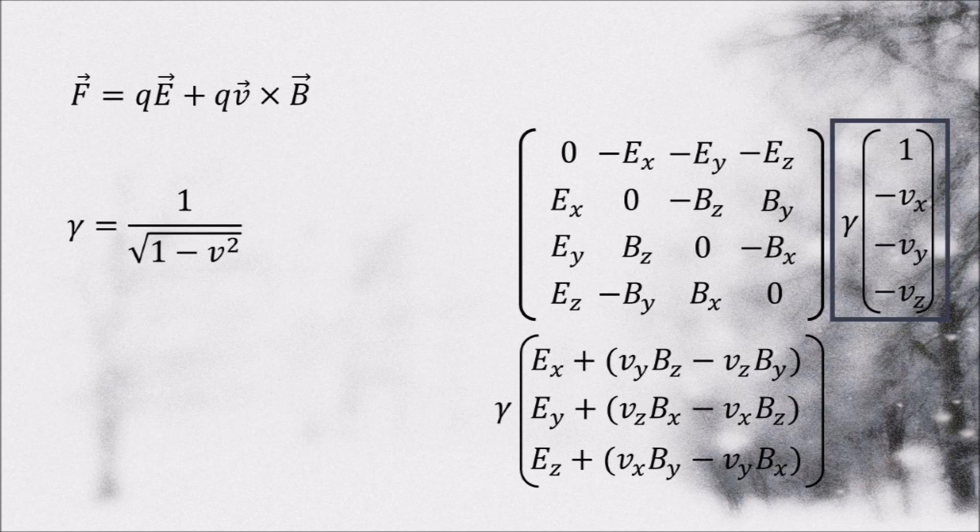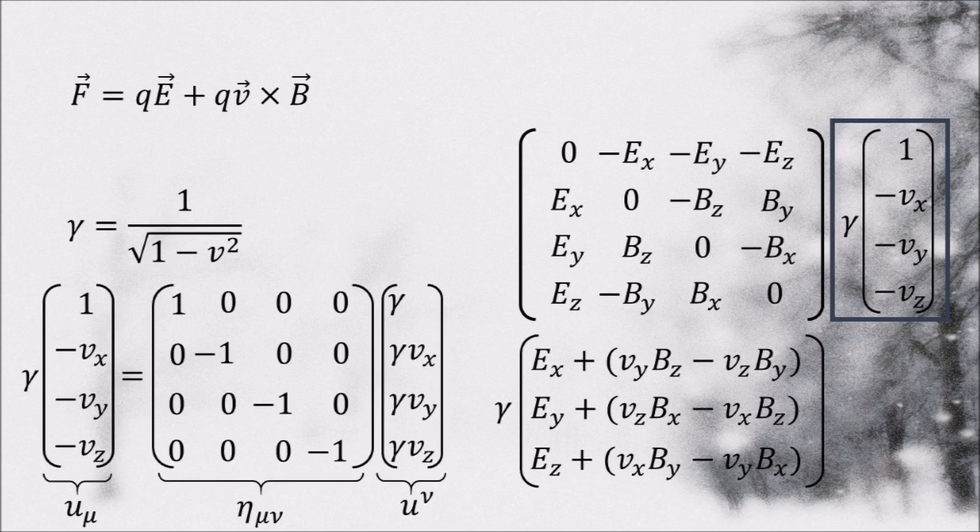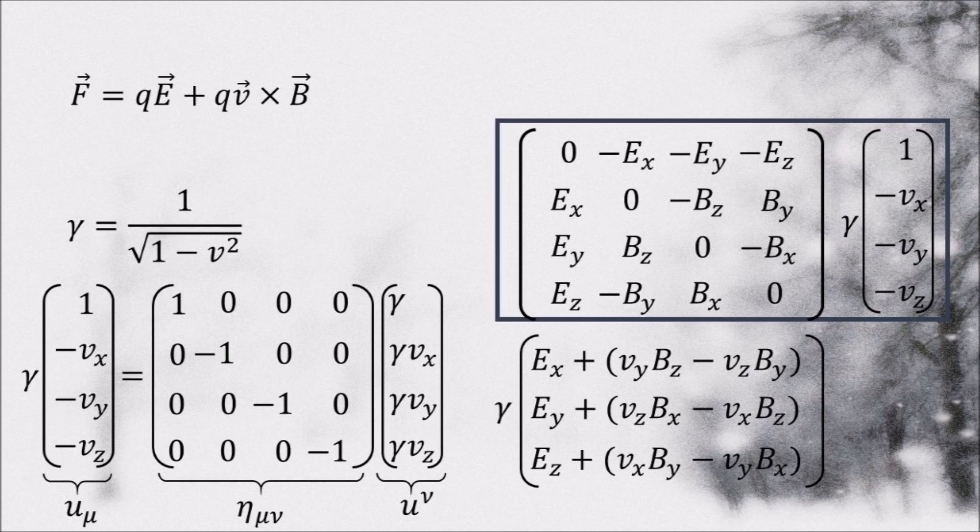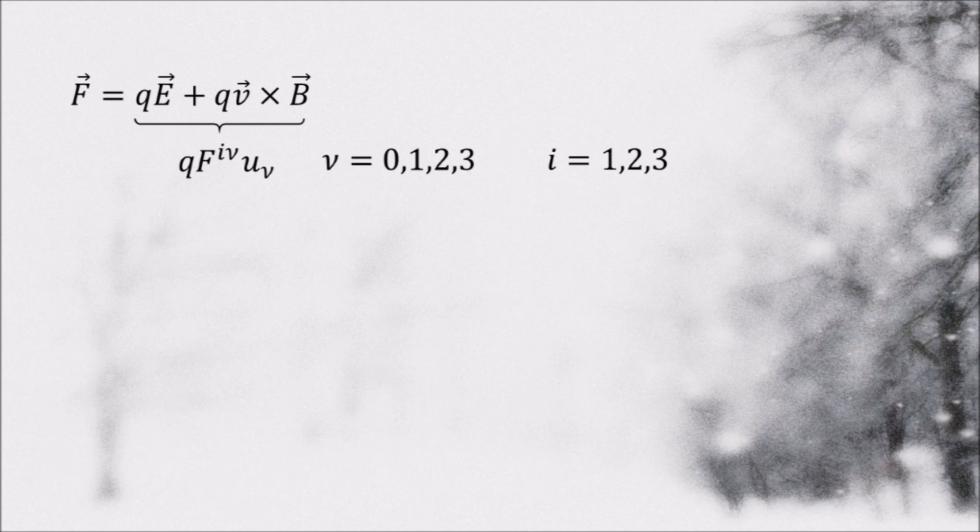Recall what this object is. It is the dual four velocity vector. So we find that up to the gamma factor, this expression reproduces the right hand side of this equation for the spatial components.